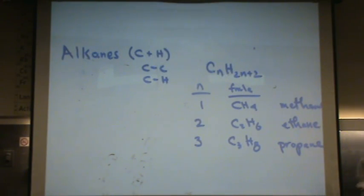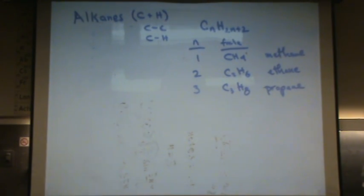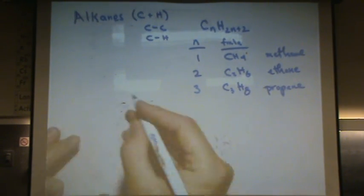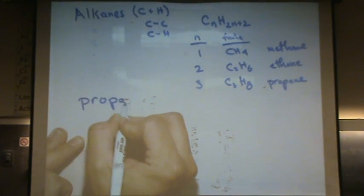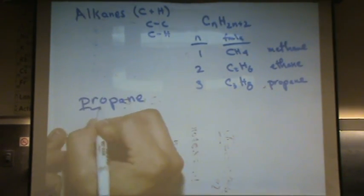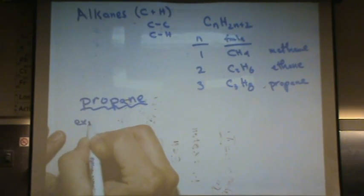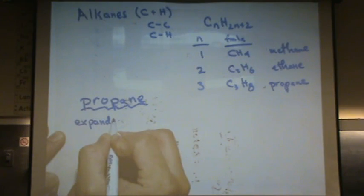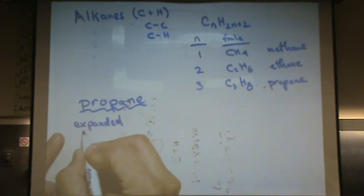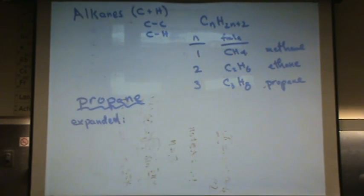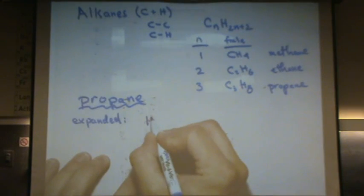Let me show you how to draw these. It's a little practice in drawing. Let's do propane as our example. Propane, C3H8. We have the expanded drawing. This is also, essentially, your Lewis structure. So Lewis or expanded are the same thing. And so you would draw it like this.